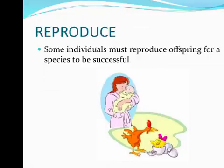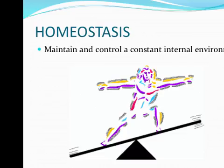All organisms reproduce. That's not to say that every single individual has to reproduce, but as long as enough individuals of one species reproduce, it will ensure that that species will be successful. Homeostasis is maintaining a constant internal environment. For example, your body has to be at a certain temperature — if your body temperature goes out of that range, you can suffer heat stroke or hypothermia.